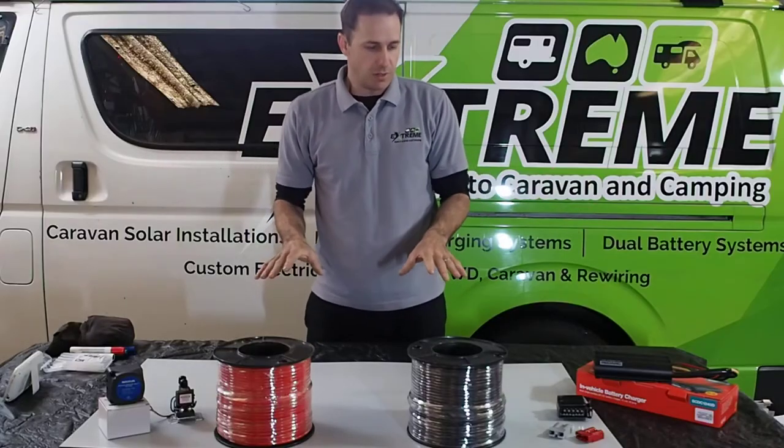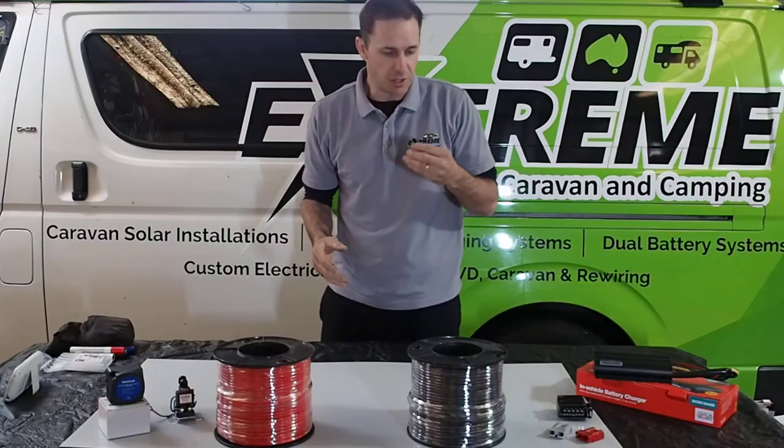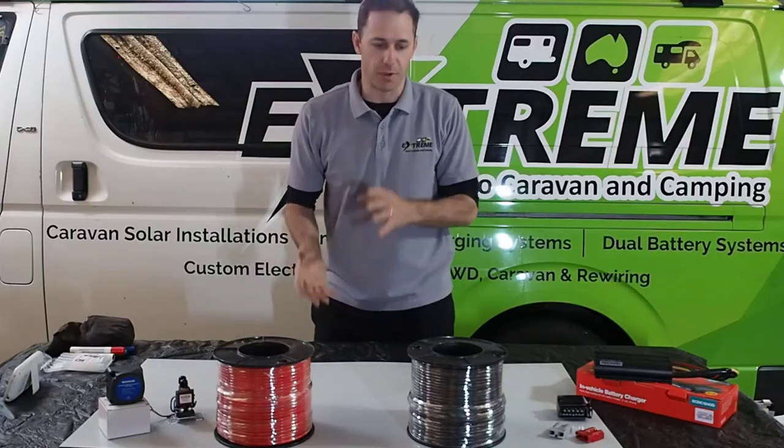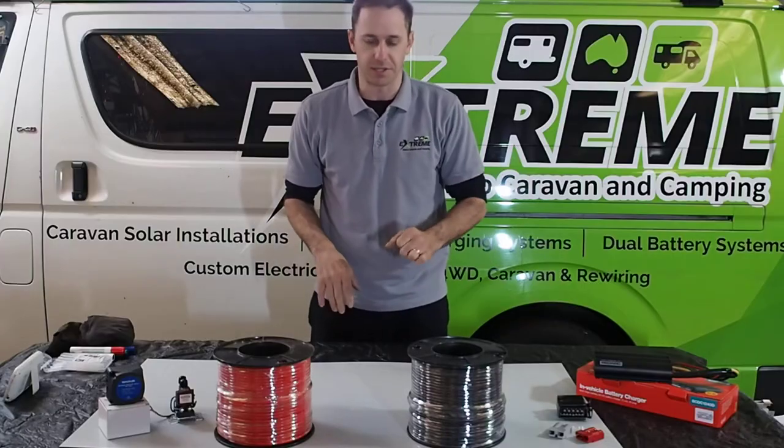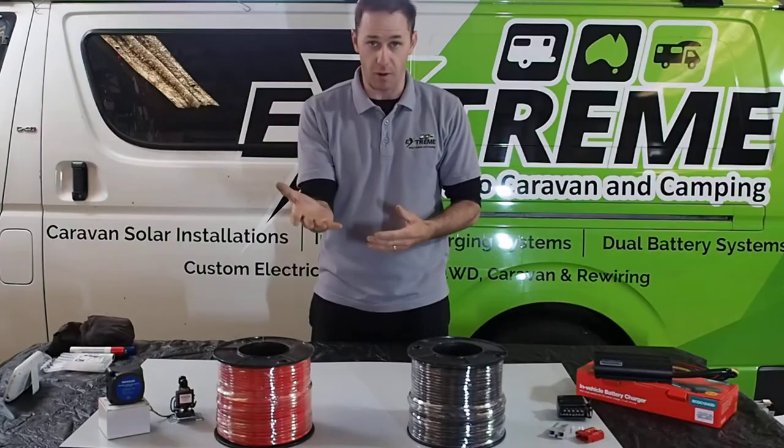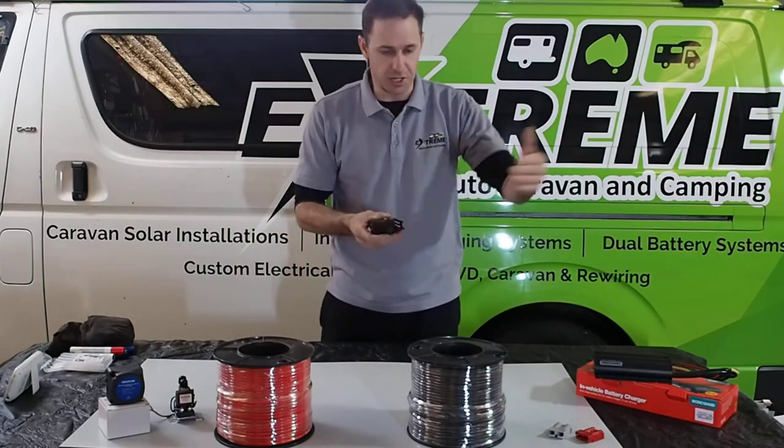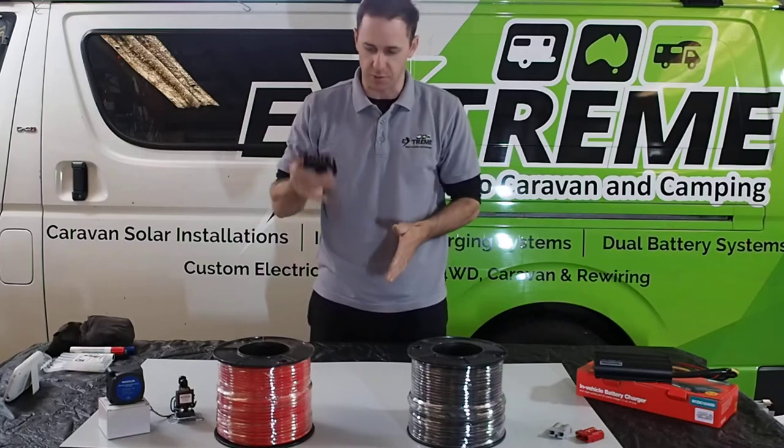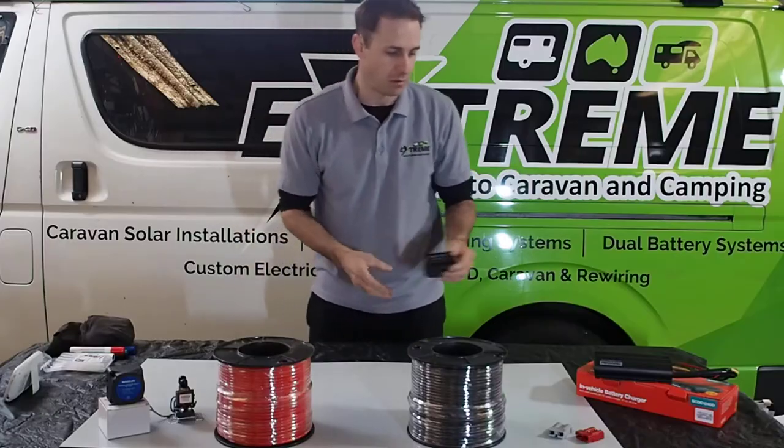So the way I do it, I like the Anderson system because it's a 50 amp plug. You can get really thick cable into the back of it as opposed to a 12 pin. 12 pin is okay but the Anderson plug system is better. So I'm going to run through both setups using the red and grey Anderson plug and the 12 pin setup as well. So essentially both circuits are the same. It's just the connection interface between the caravan and the vehicle that changes whichever plug setup you go for.